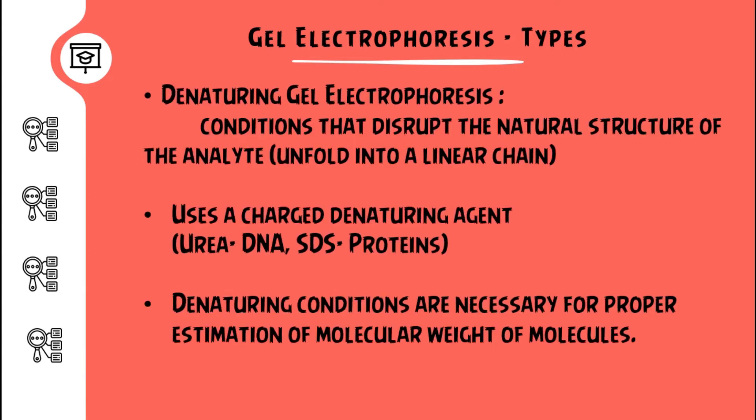With respect to denaturing gel electrophoresis, it is where the condition that disrupts the natural structure of the analyte is given — that is, unfolding of complex structure into a linear chain. Here, the charged denaturing agents are used. In the case of DNA, urea is used, and in the case of protein, SDS — sodium dodecyl sulfate — is used. Denaturing conditions are necessary for proper estimation of molecular weight of molecules.